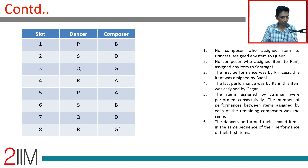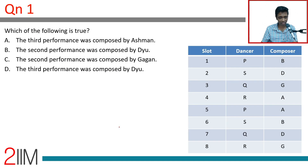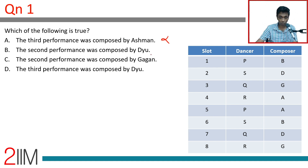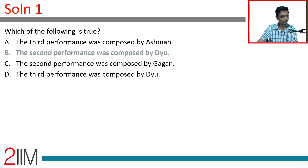Wonderful — this is a very easy set. Let's jump to the questions. Which of the following is true? The third performance was composed by Ashman — No. The second was by Dew — Yes. Second by Gagan — No. Third by Dew — No. Answer choice B.